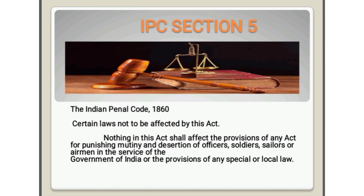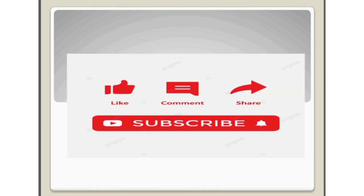Section 5 — Indian Penal Code 1860: Certain Laws Not to Be Affected by This Act. Nothing in this act shall affect the provisions of any act for punishing mutiny and desertion of officers, soldiers, sailors, or airmen in the service of the Government of India, or the provisions of any special or local law.